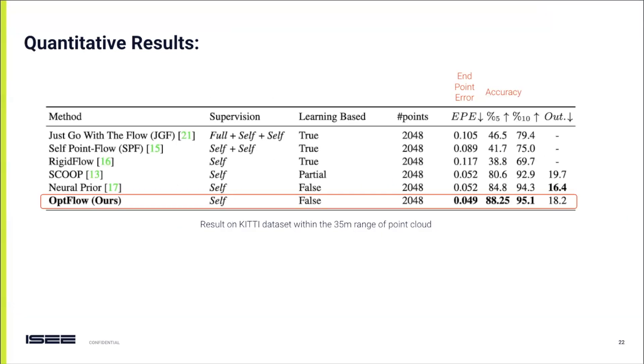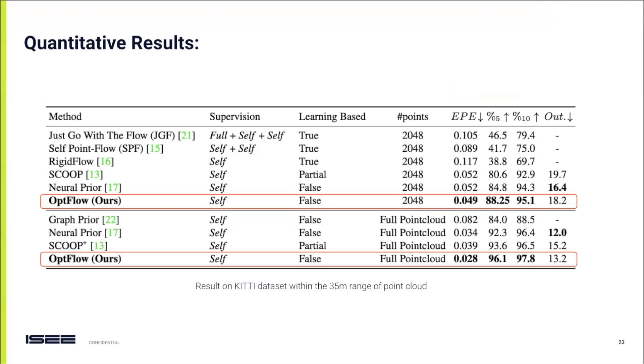Turning our attention to the quantitative results, our model demonstrates exceptional performance, particularly in comparison with other self-supervised and non-learning based methods, as tested on the Kitti dataset. In this table, we compare our methods against the leading state-of-the-art scene flow estimation techniques for a 2048 point cloud setup. The results are clear: our method achieves the lowest endpoint error and the highest accuracy. When we extend our evaluation to the full point cloud, our method maintains its superiority, especially when benchmarked against non-learning based methods.